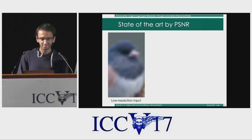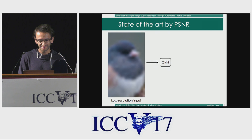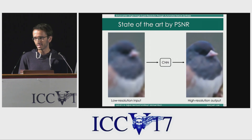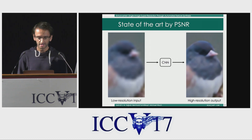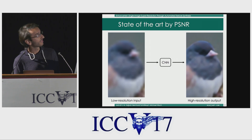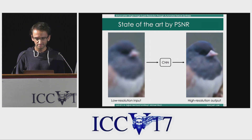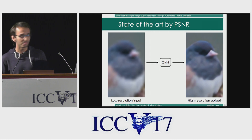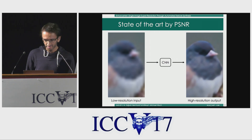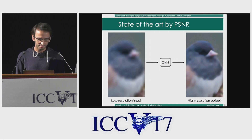The idea is very simple. We just take our low resolution inputs and feed them into fully convolutional neural networks. We get our output and then we just take the loss during training between the ground truth and the produced image. When we train our models, we get the image you see on the right. This is actually the state of the art by PSNR. We see the image is much sharper than the input and the edges are more clearly defined, but overall the whole image is still very blurry.